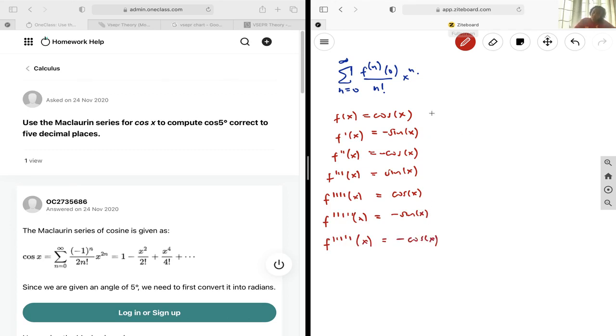Okay, so evaluated at zero, this is going to be one, this is going to be zero, this is going to be negative one, zero, one, zero, negative one. So you see we're just basically through another series.